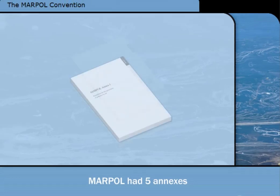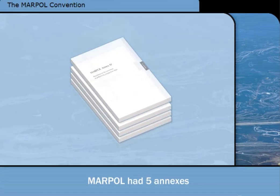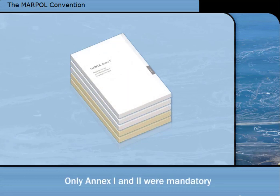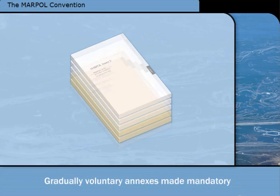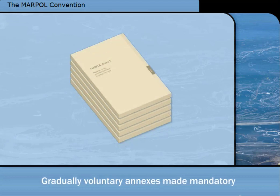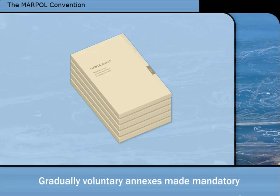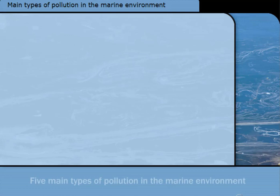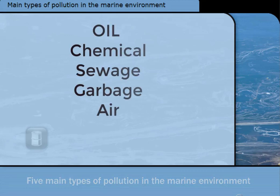When MARPOL was introduced, it had five annexes, each covering one source of pollution. Only Annexes 1 and 2 were mandatory. Growing worldwide recognition of the problems caused by the other types of pollution has gradually led to the voluntary annexes becoming mandatory, and a sixth annex being added. There are five main types of pollution in the marine environment: oil pollution, chemical pollution,